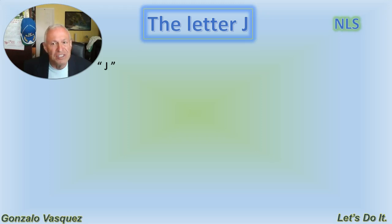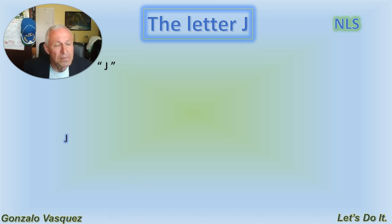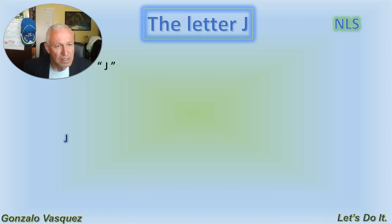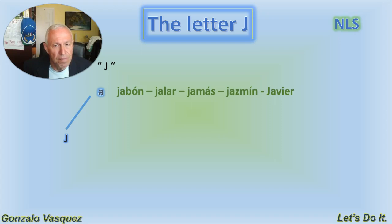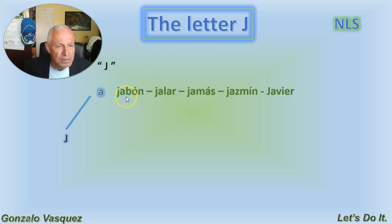In this video we are going to talk about the letter J in English — la letra J. As you can hear, the way it sounds: the name of the letter is J. Now with the vowel A, the sound is 'ja.' Some examples: jabón, jalar, jamás, jazmín, Javier.